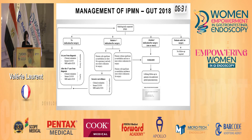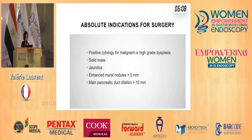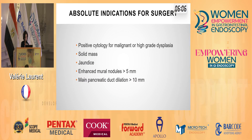This chart shows you how to manage IPMN. It is available in the ReviewGut 2018 guidelines. We don't follow patients who are not fit for surgery. The decision to monitor or to treat the patient is based on several criteria. Absolute indications for surgery are: positive cytology for malignant or high-grade dysplasia, the presence of jaundice or solid mass, enhanced mural nodules over 5 mm, or a pancreatic duct dilation over 10 mm.